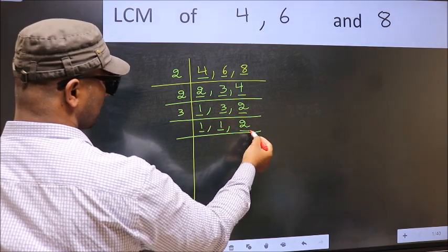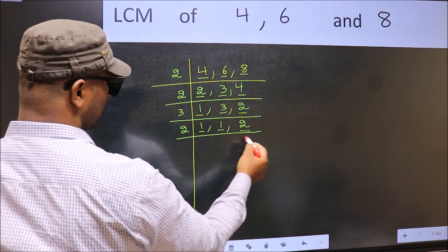Now we got 1 here. So focus on the other number 2. 2 is a prime number. So 2 1s, 2.